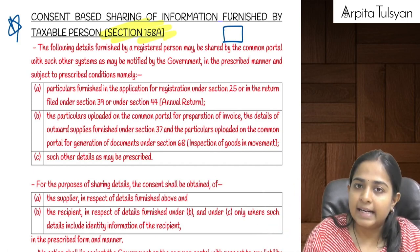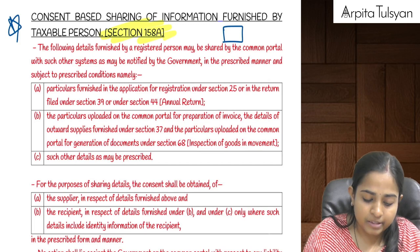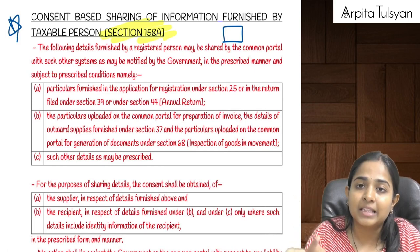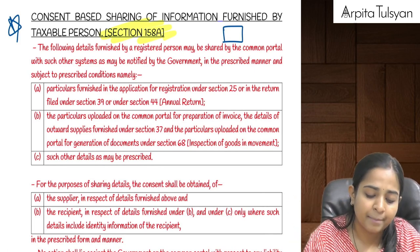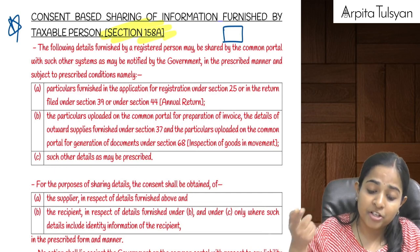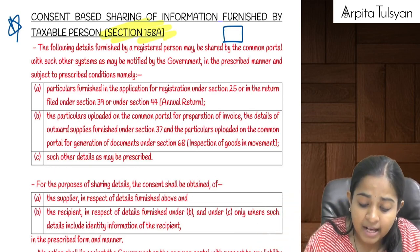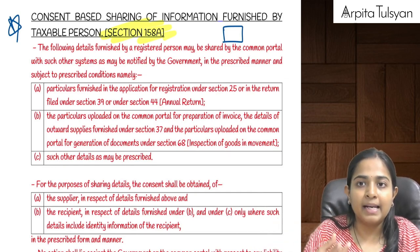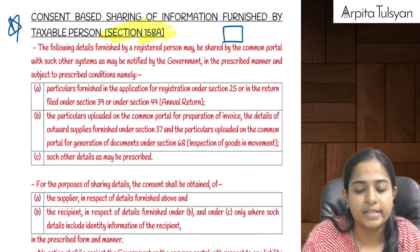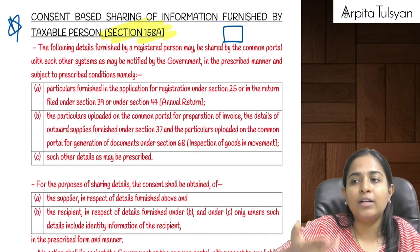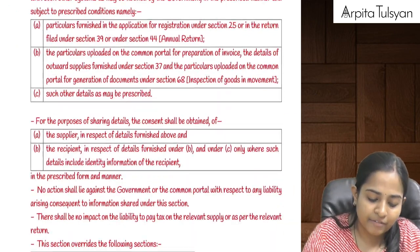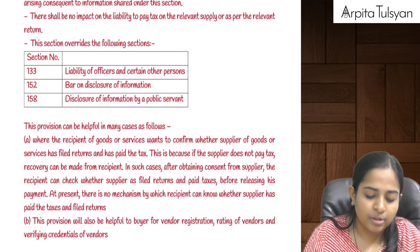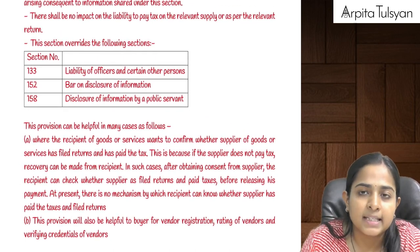The information that can be shared includes GSTR-1, GSTR-3B, GSTR-2B details, registration information, e-way bill information, and e-invoice information. If you give your consent to the GST portal, the portal can share this information with any other person or entity.